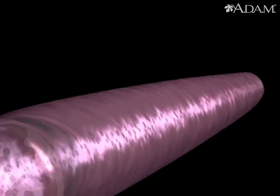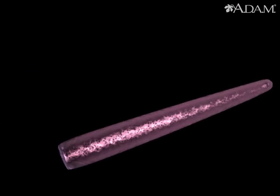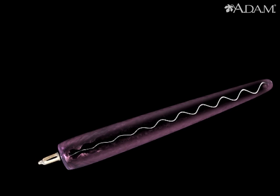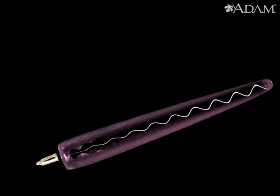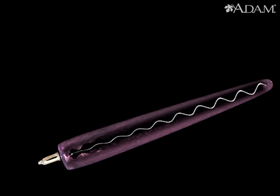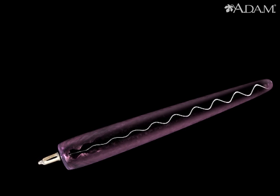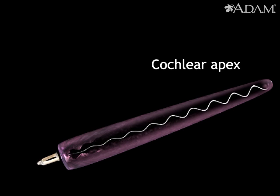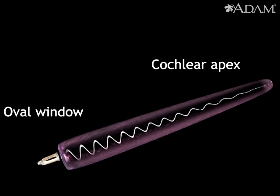Let's watch this process in action. First, the stapes rocks against the oval window. This transmits waves of sound through the cochlear fluid, sending the organ of corti into motion. Fibers near the upper end of the cochlea resonate to lower frequency sound. Those near the oval window respond to higher frequencies.